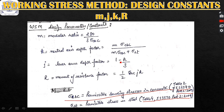J is the lever arm depth factor given by (1 - K/3), where K is the neutral axis depth factor. R is the moment of resistance factor given by half times sigma_cbc times J times K. We require all four parameters M, K, J, and R for calculating the bending moment and area of reinforcement in any RCC structure.